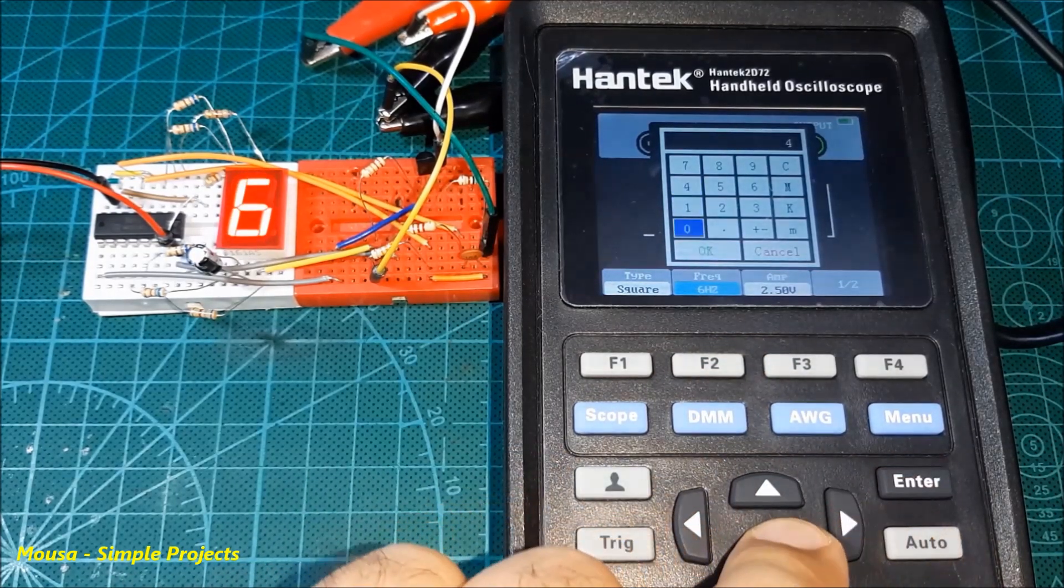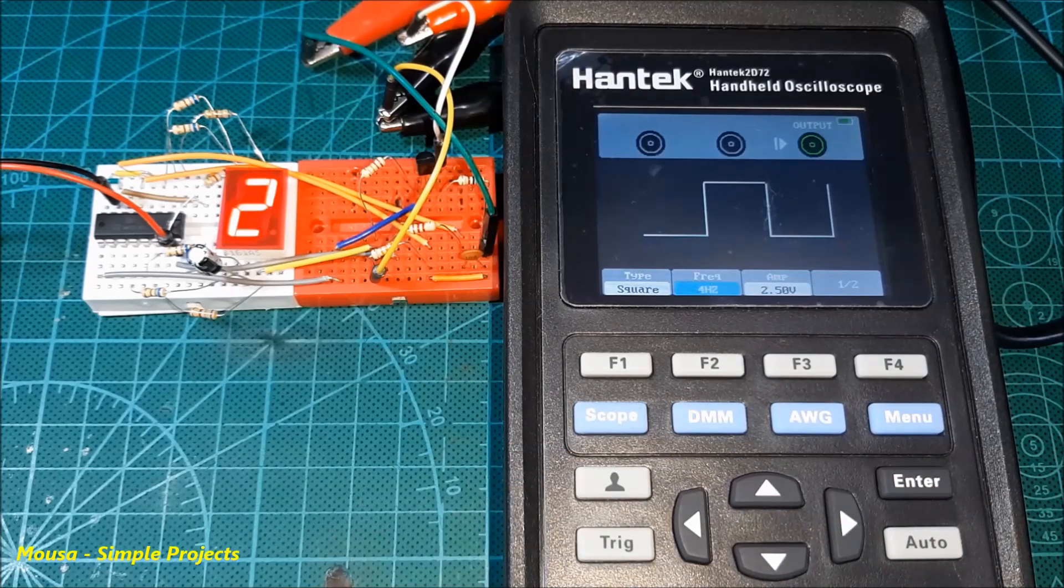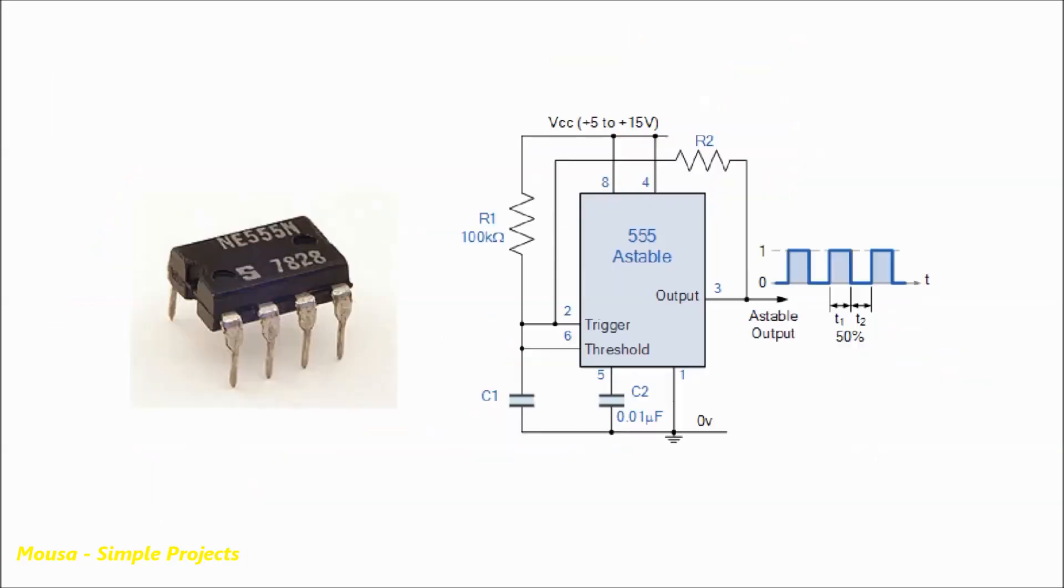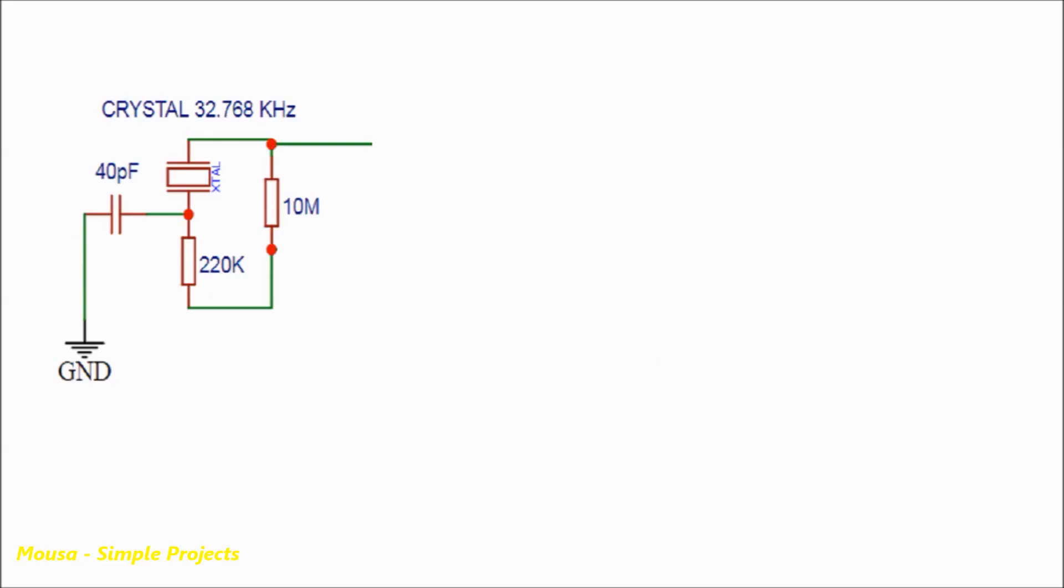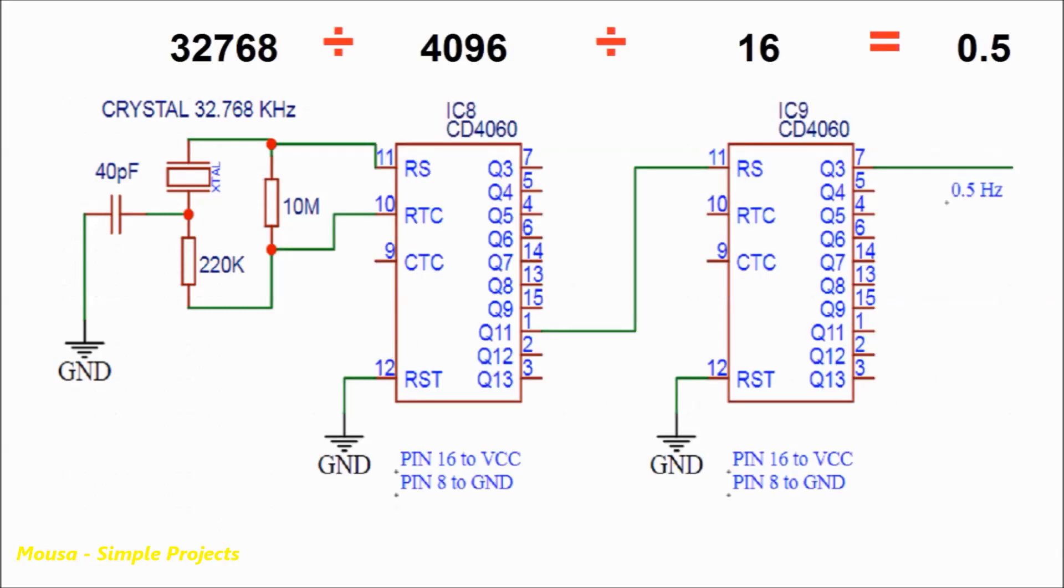So using the latch enable gives you the final result without showing the counting process. To make this oscillator, we can't use a 555 IC because the output frequency in a 555 IC is not accurate, so we have to use a crystal oscillator. I'm using a 32.768 kilohertz crystal. Then I'm using 4060 ICs as frequency dividers. The first IC divides this frequency by 4096 times, the second IC divides it again by 16 times, so the final output frequency will be 0.5 hertz with high accuracy.